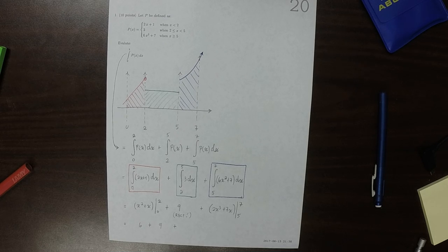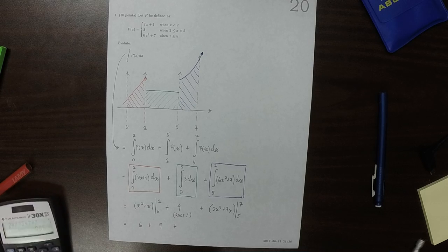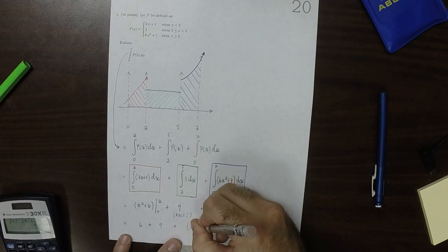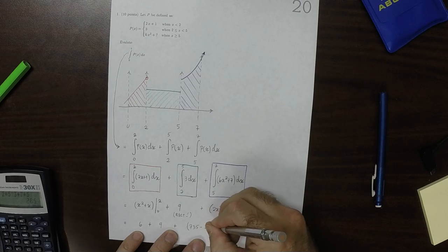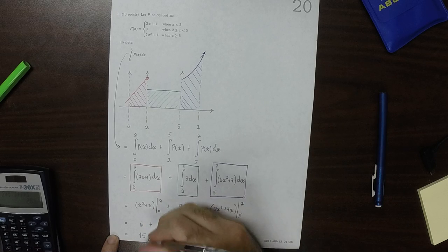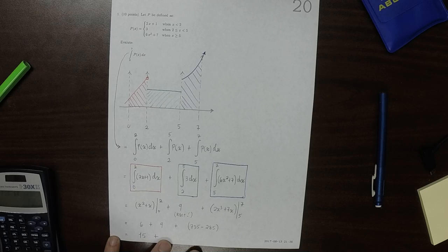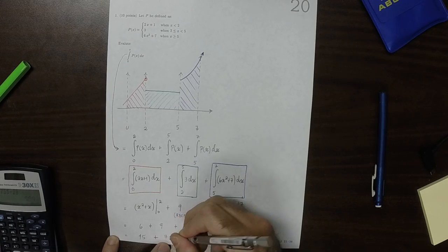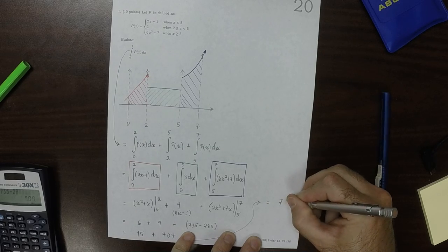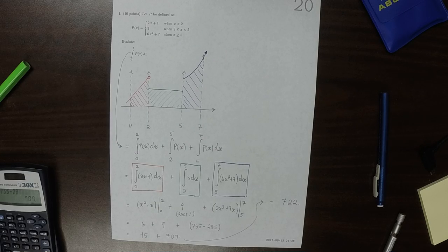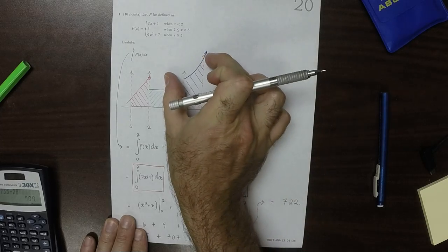So that's 2 times 7 cubed plus 7 times 7. So that'd be plus 735 minus 285 which is 707. The sum of those is 722. Most of the area is in this blue shape because this is actually way, way, way up high.